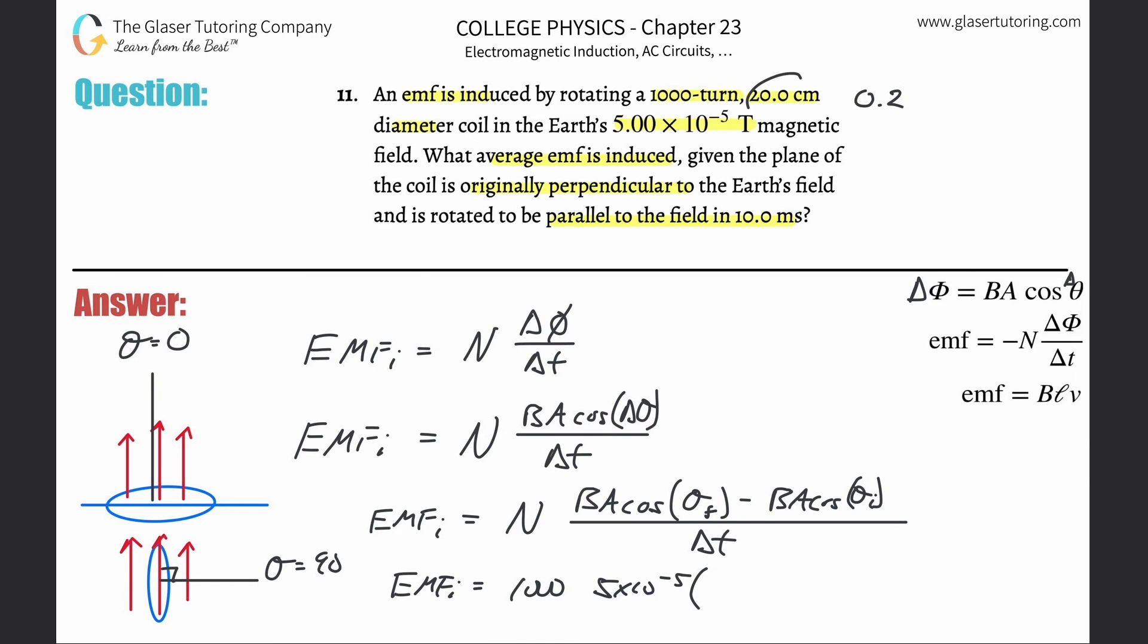But that represents the diameter. So then you have to divide that by 2, so it's 0.1 meters is the radius.